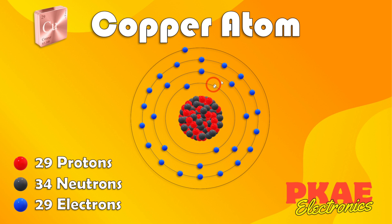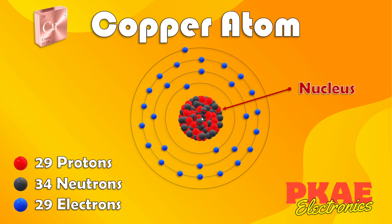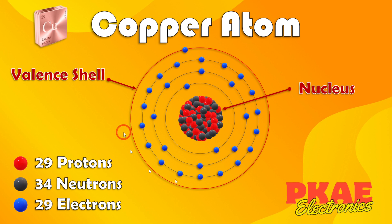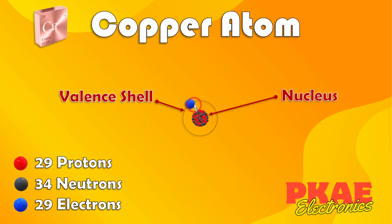Now let's simplify the illustration of this atom. We don't need to show all the inner shells as long as we know we've got a balance between the number of protons and electrons, and that the outer shell primarily consists of one electron. That outermost shell is called the valence shell, and it's this valence shell that gives the atom its key properties. So simplified, we have the nucleus — which is positively charged — and the valence shell containing one electron, which is negatively charged. It's this electron that's free to move around; we can ignore the 28 other electrons.